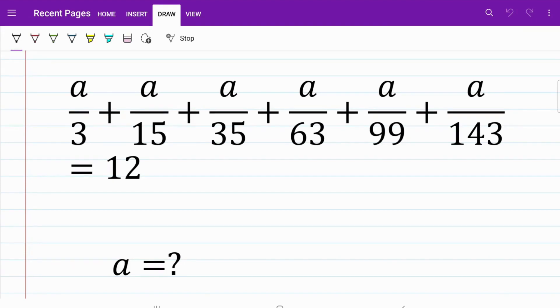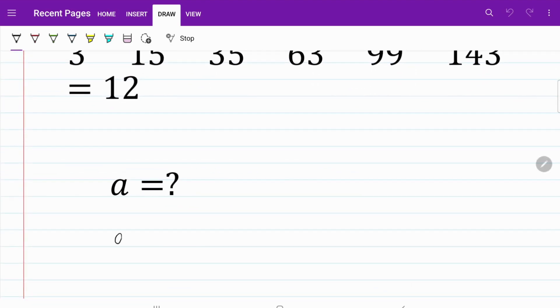The first thing that we are going to do is to isolate the numerator A as the common term. So, what we have is A multiplied by 1 over 3 plus 1 over 15 plus 1 over 35 plus 1 over 63 plus 1 over 99 plus 1 over 143 is equal to the right-hand side of 12.